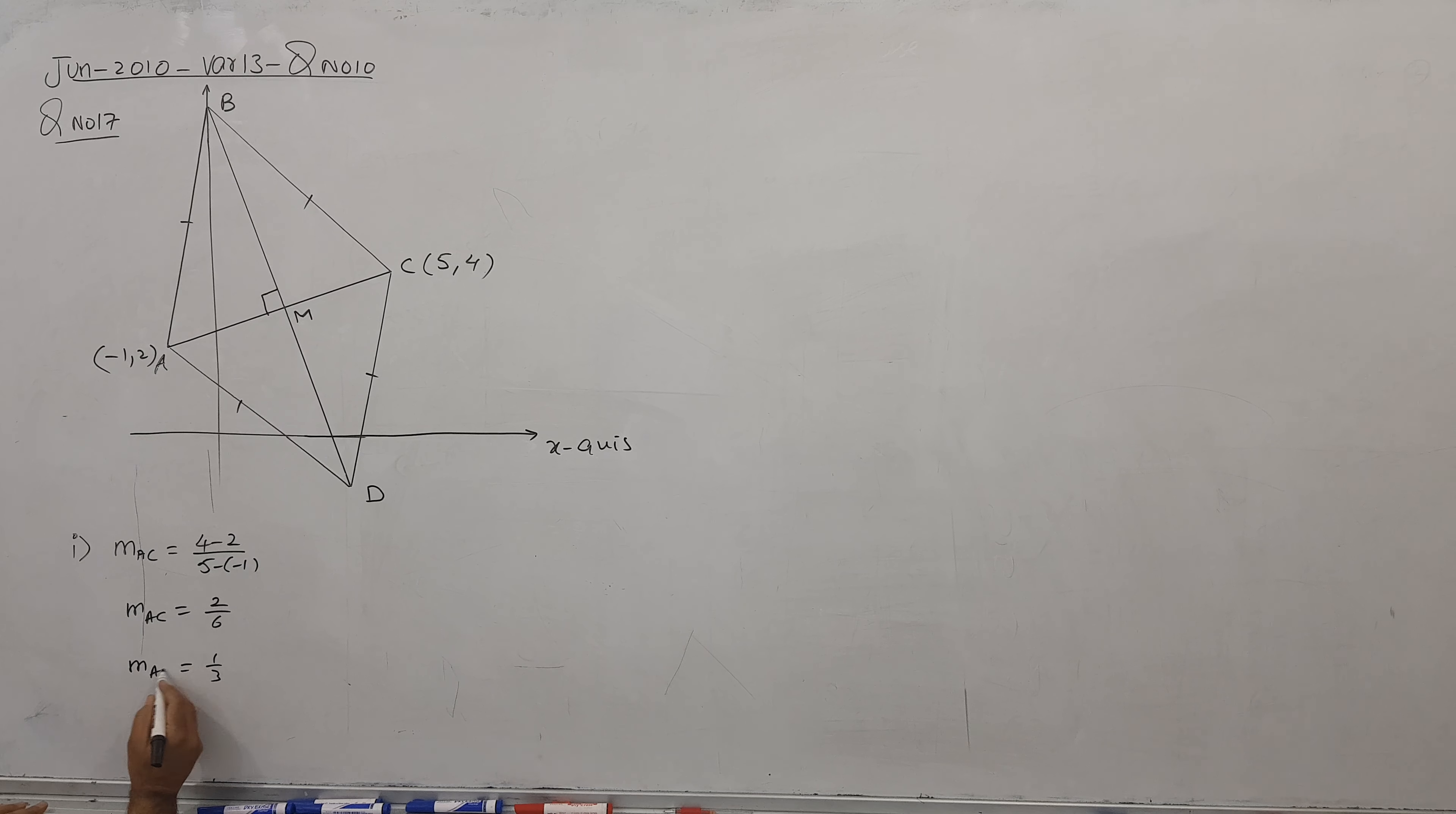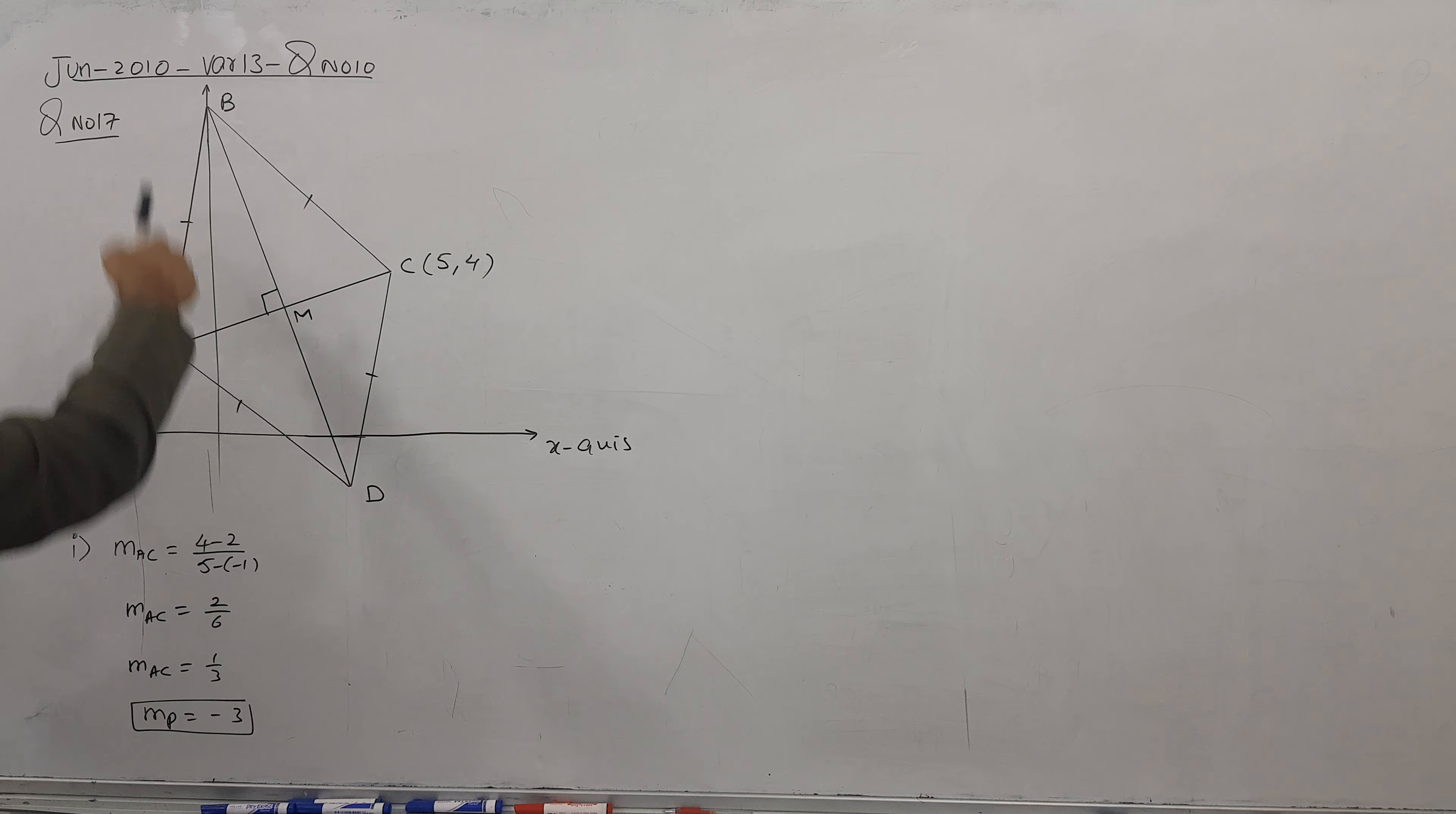So if I need BD, what is the gradient of perpendicular? Gradient of perpendicular becomes negative 3. I will use this for the gradient of BD, so this gradient is 1 by 3, this becomes negative 3.